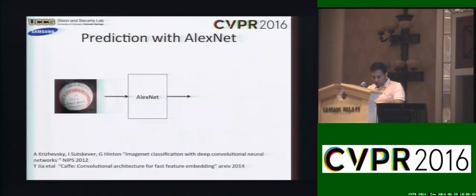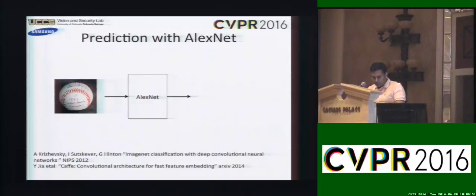Consider the problem of prediction with pre-trained deep neural networks like AlexNet. The network accepts an image and produces a class label and output probability based on softmax regression — in this case, baseball.